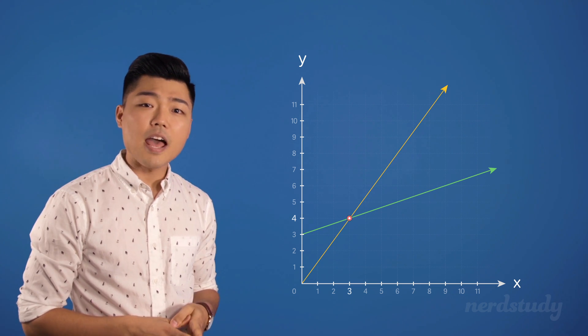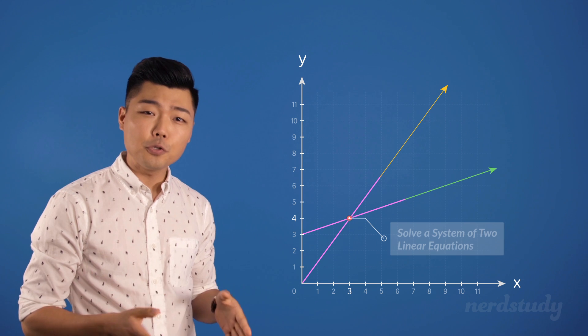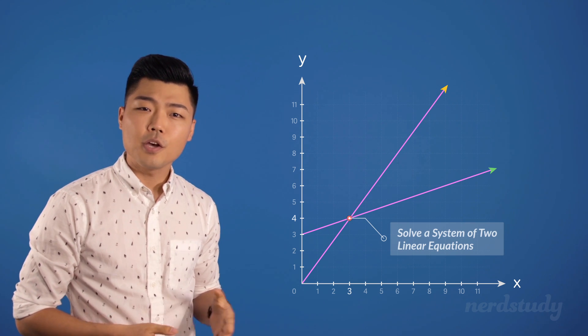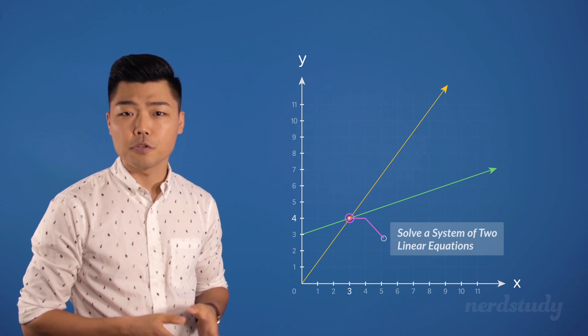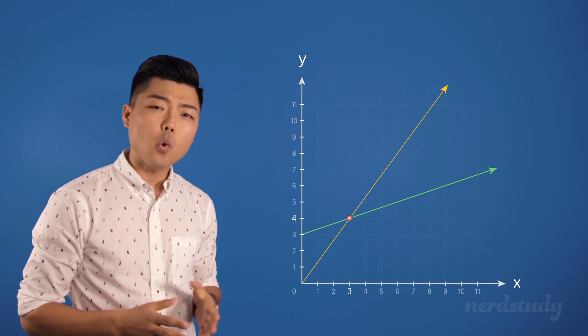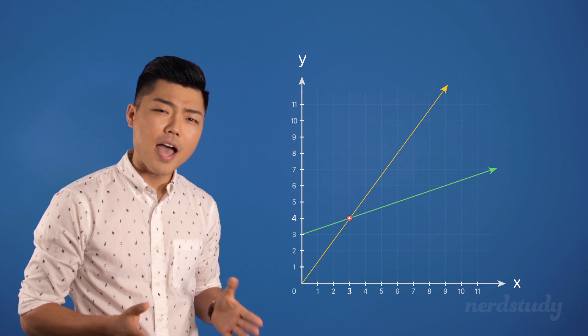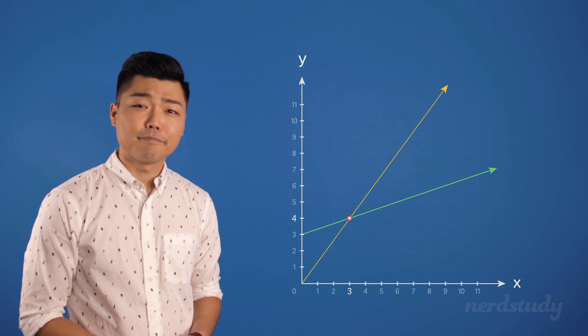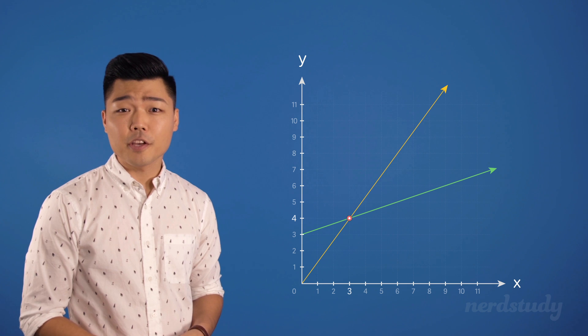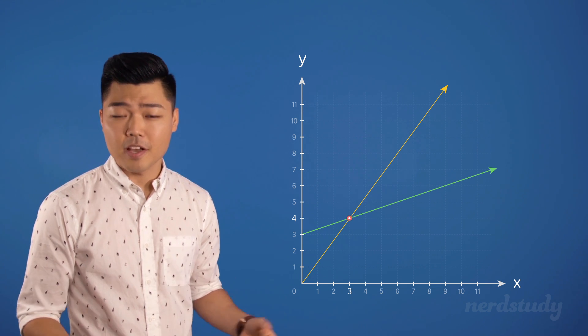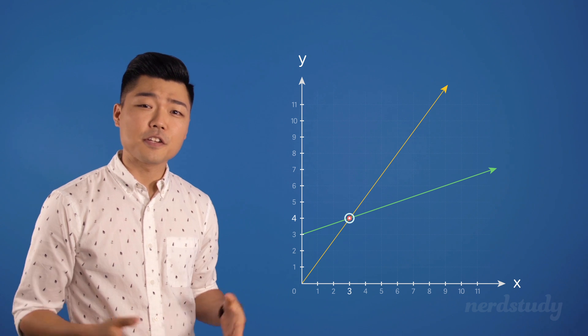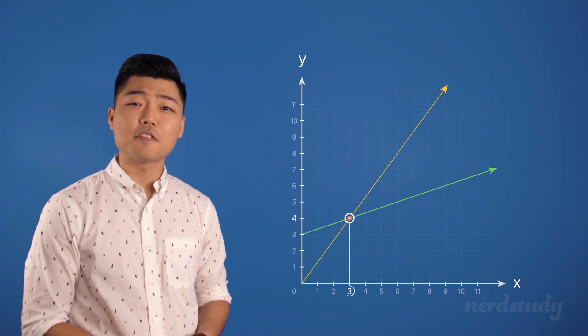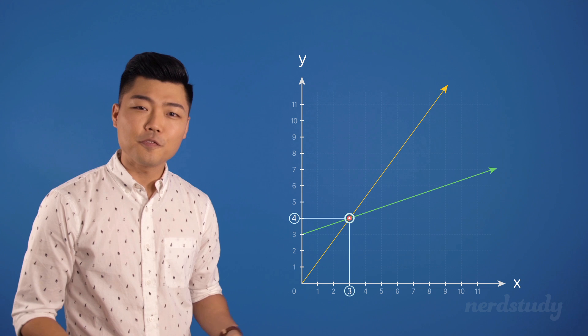Thus, if you're ever asked to solve a system of two linear equations, what you should do is simply find the intersection point of the two lines. But the question now is how? There are a few different ways to do it. The simplest way is when you're given literally a graph. All you have to do is look for the point in which they intersect and simply take note of the x and y coordinates to find your solution.